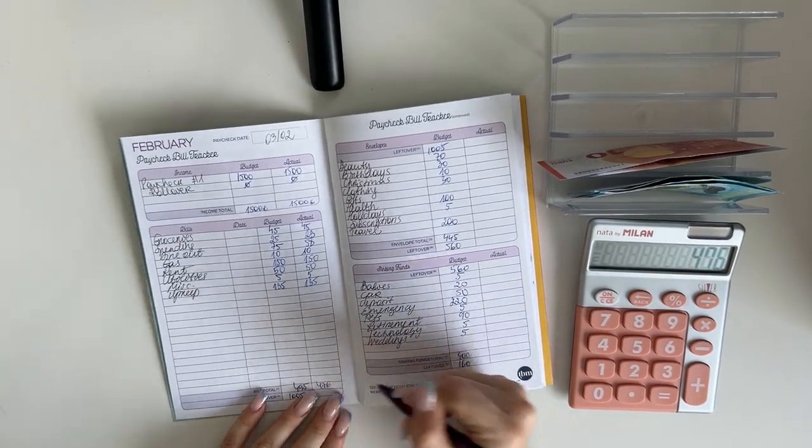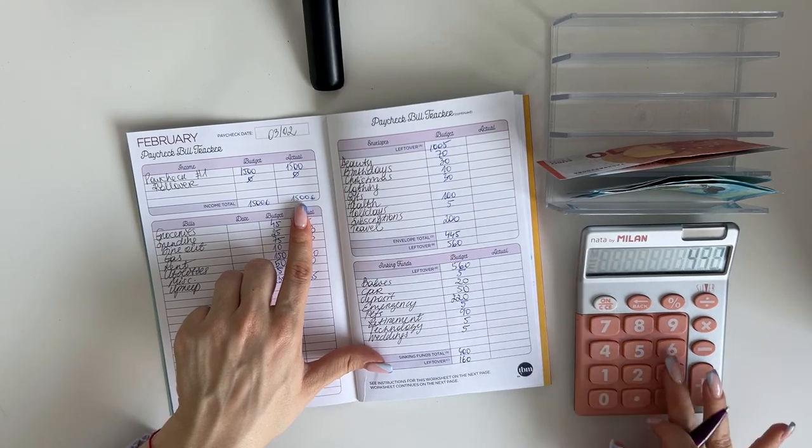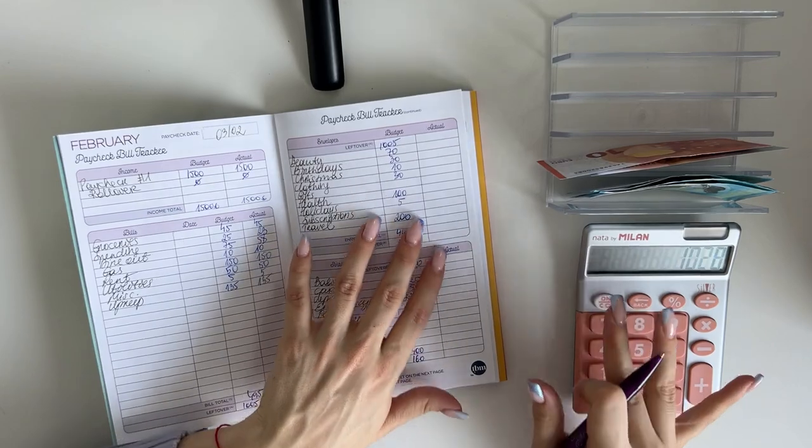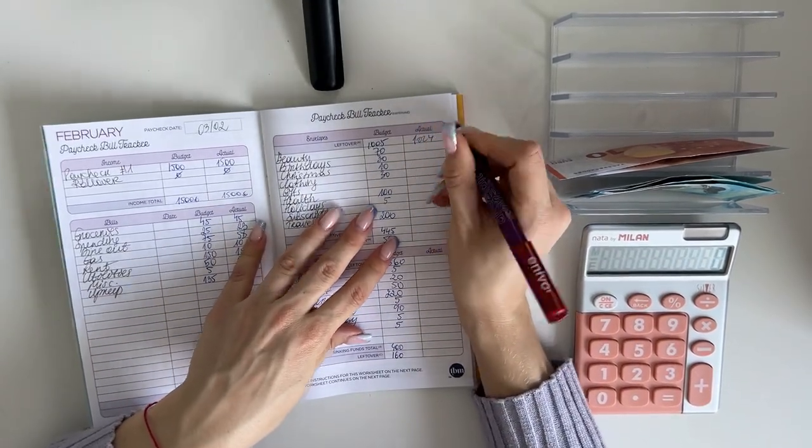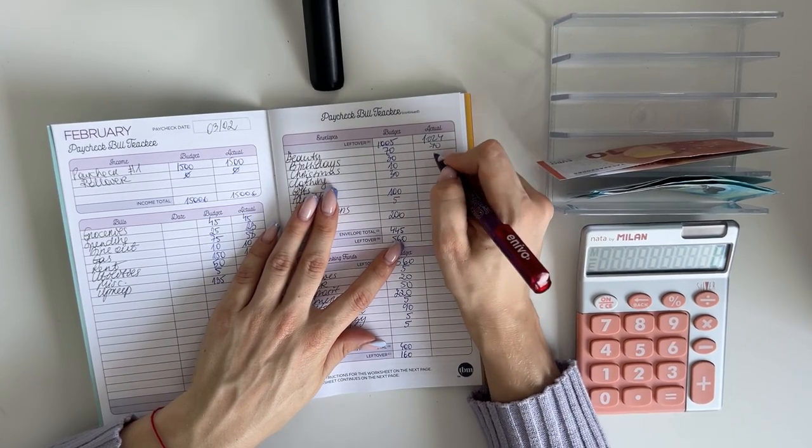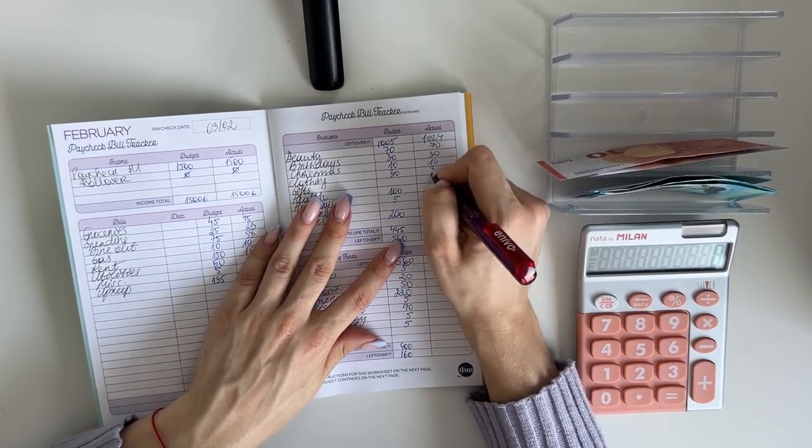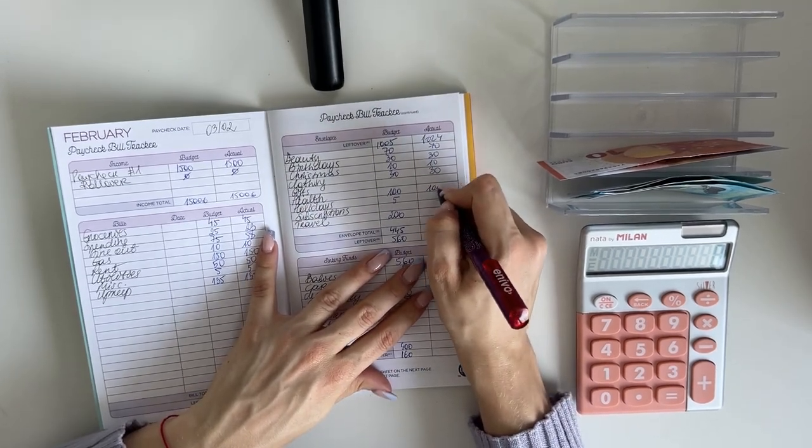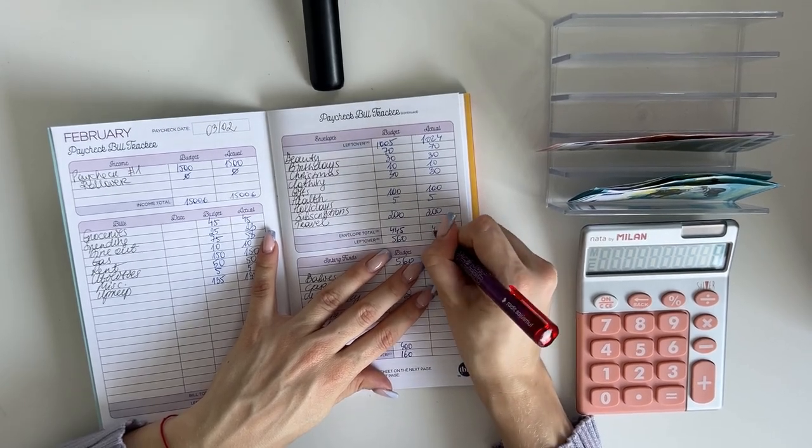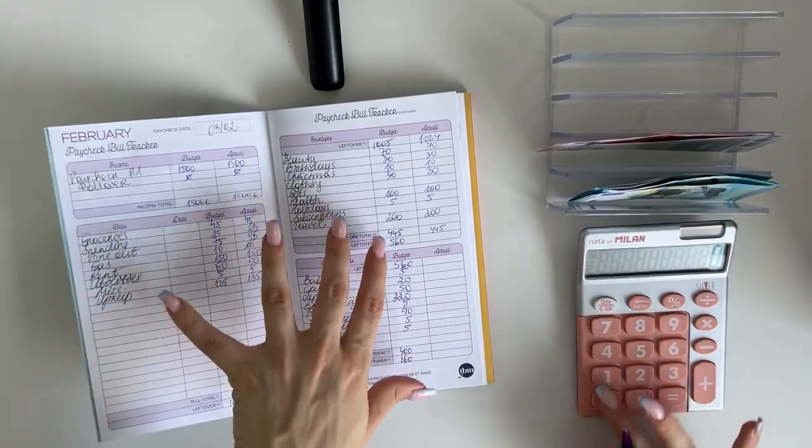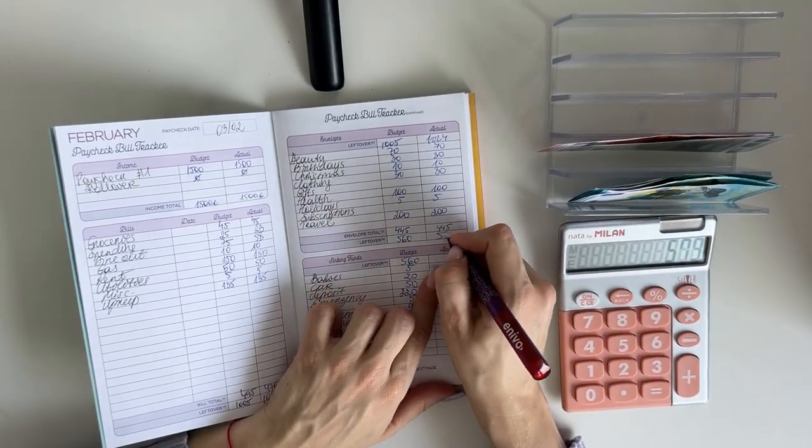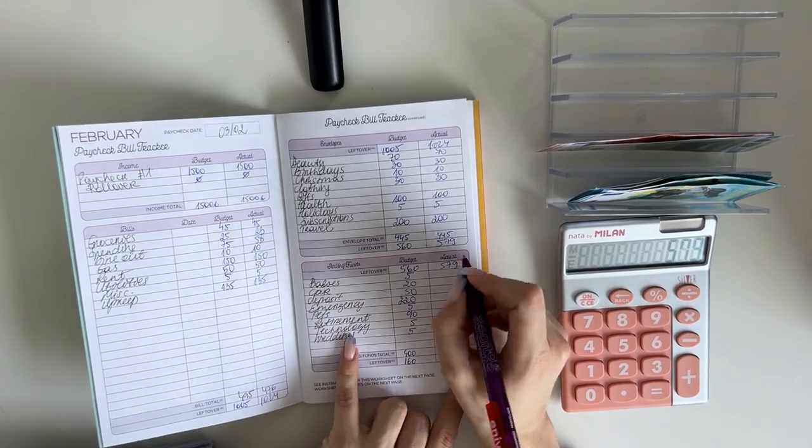So 1,500 minus 476 is 1,024. Great. So short-term sinking funds, everything stayed the same here. Beauty was 70, birthdays was 30, Christmas 10, clothing 30, health 100, holidays 5, and travel 200. So it was 445.